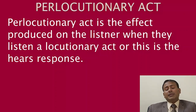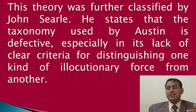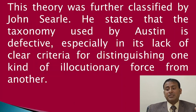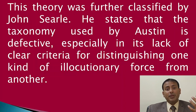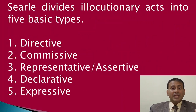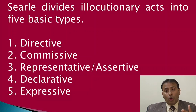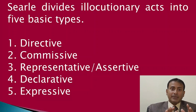Searle did not agree with all of Austin's ideas. Searle states that the taxonomy used by Austin is defective, especially in its lack of clear criteria for distinguishing one kind of illocutionary force from another. So he divides the illocutionary act into five basic types: directives, commissives, representative or assertive, declarative, and expressive.